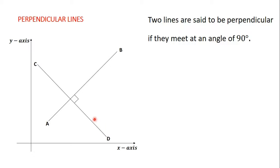If two lines meet and the angle formed between them is a right angle or 90 degrees, then those two lines are said to be perpendicular to each other. There is something interesting about the gradient of perpendicular lines. If two lines are perpendicular, the product of their gradients is negative 1.